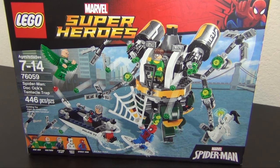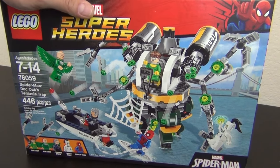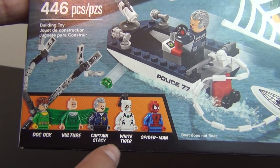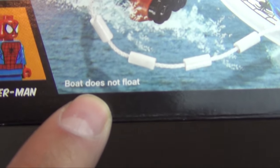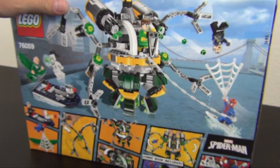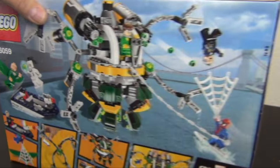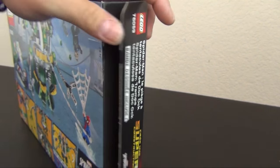Hey everyone, welcome back to The Hidden Brick, where today we're going to build the LEGO Marvel Superhero Spider-Man Doc Ock's Tentacle Trap, set number 76059. Comes with 446 pieces and a handful of minifigures: Doc Ock, Vulture, Captain Stacy, White Tiger, and of course Spider-Man. Oh, and the boat does not float, probably because there's holes on the bottom of it, or maybe because the whole back end is open. Let's go ahead and bust this open and check it out.